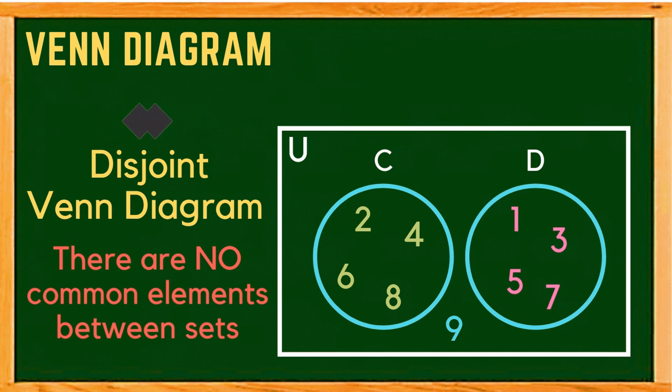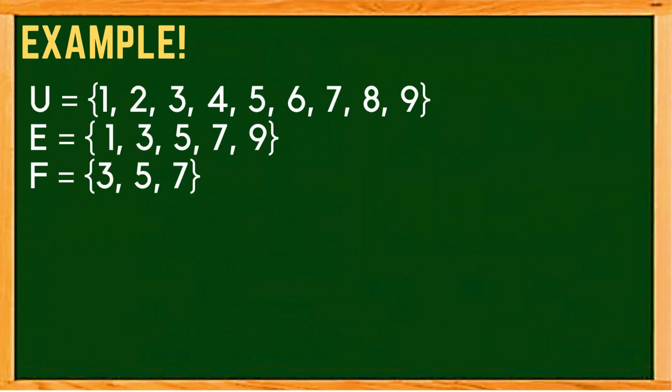Another example: we have set E consisting of 1, 3, 5, 7, and 9, and set F consisting of 3, 5, and 7. As we can observe, all elements of set F are also elements of set E. How do we represent this using the Venn diagram?